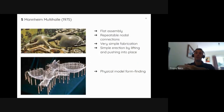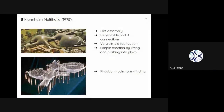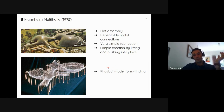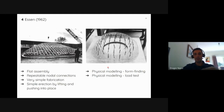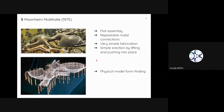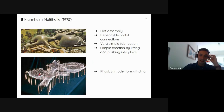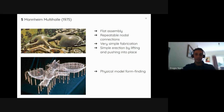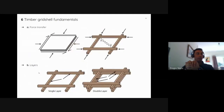The Essen prototype was followed in 1975 by the Mannheim Multihalle. The same principles apply — flat assembly, repeated node connections, simple fabrication, and physical model — but at a thousand times the complexity. It spans 60 by 80 metres and is quite an astonishing building. The hanging chain model used for form finding is similar to the Essen situation. Physical models were used for both form finding and load testing.